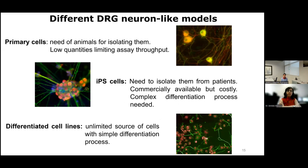There are three different DRG neuron-like models for the development of phenotypic screening: primary cells, IPS cells, and differentiated cell lines.